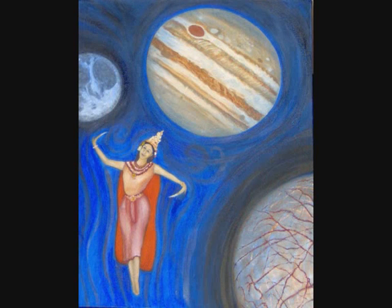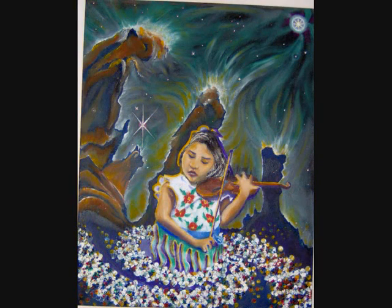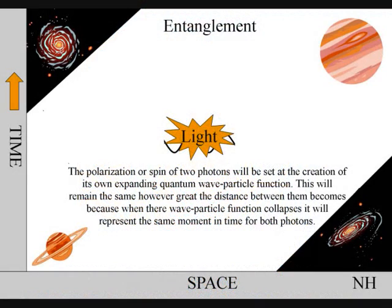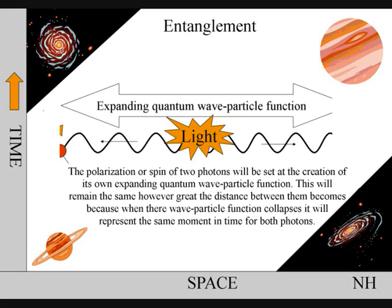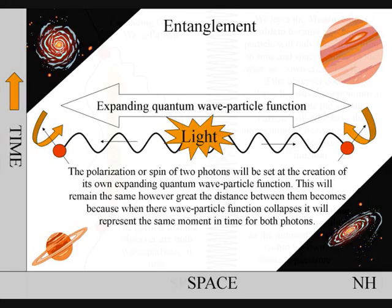However insane this theory might sound, it can explain the paradoxes and weirdness of quantum mechanics. We have entanglement because light moves through space, but not time, as a wave-particle function. The polarisation of two photons will be set at the creation of its own expanding quantum particle wave function. This will remain the same however great the distance between them becomes, because when their wave-particle function collapses, it will represent the same moment in time for both photons.